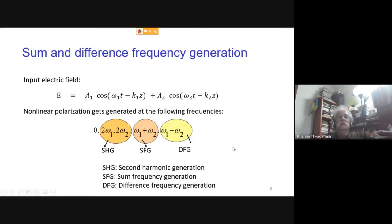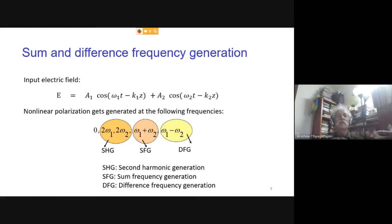Instead of launching one wave, if we launch two waves at two different frequencies ω₁ and ω₂, the nonlinear polarization proportional to E² will contain a term with cos(ω₁t) × cos(ω₂t), generating new frequencies ω₁ + ω₂ (sum frequency generation) and ω₁ − ω₂ (difference frequency generation). So launching two waves into a crystal can generate not only second harmonics but also sum and difference frequencies — you can generate a very large number of frequencies starting from just one or two input waves.